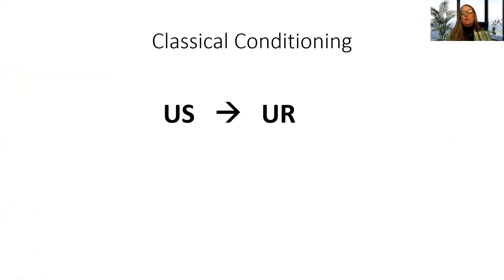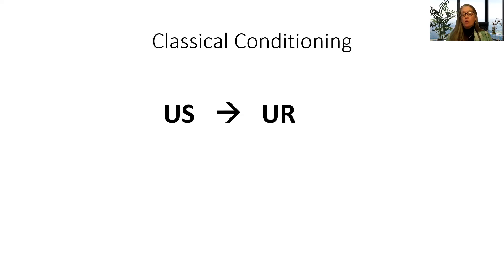We're going to have an unconditioned stimulus that leads to an unconditioned response. The unconditioned stimulus we call the US, and the unconditioned response is the UR. This combination, this pairing, the organism is born with — the organism doesn't need to learn this. Here are some examples of US-UR combinations that are inborn in human beings and some other higher-order animals.